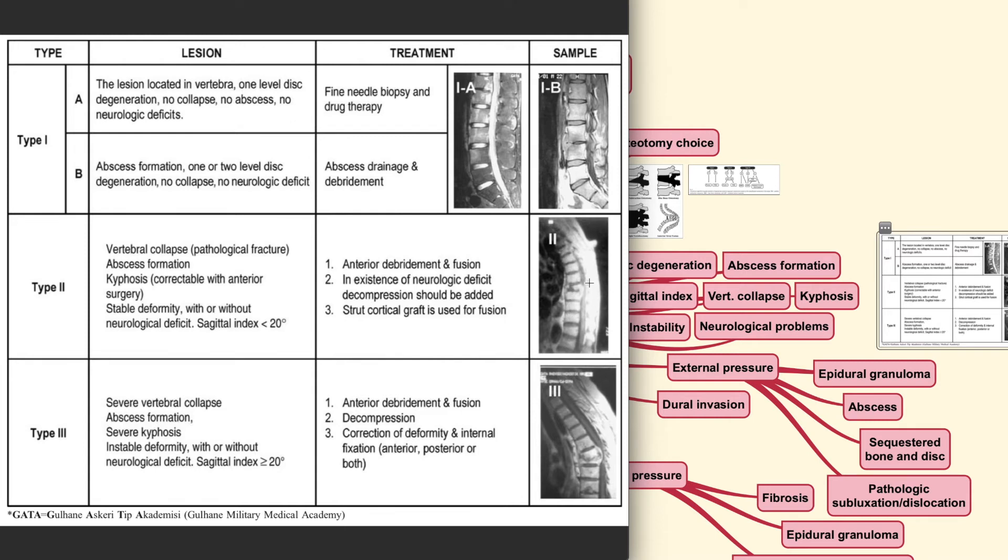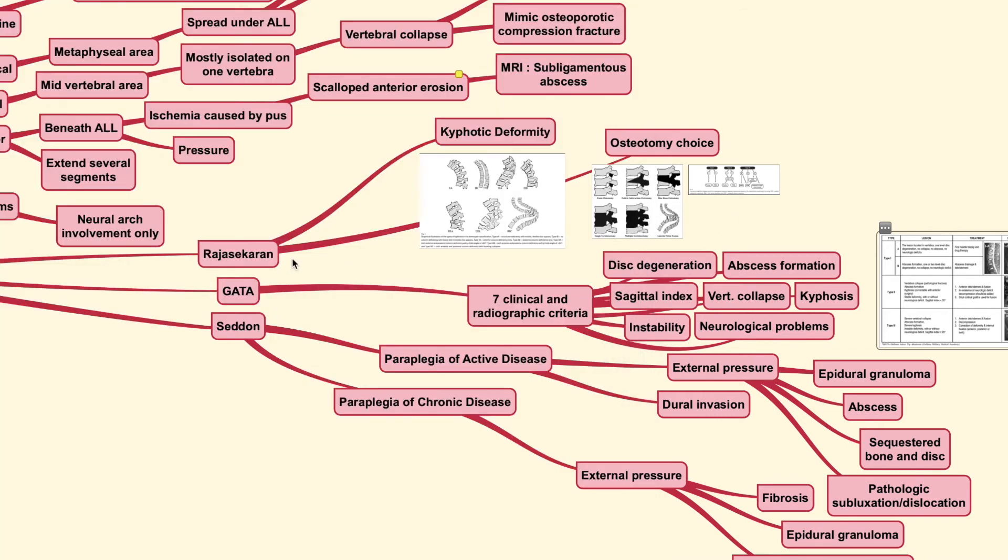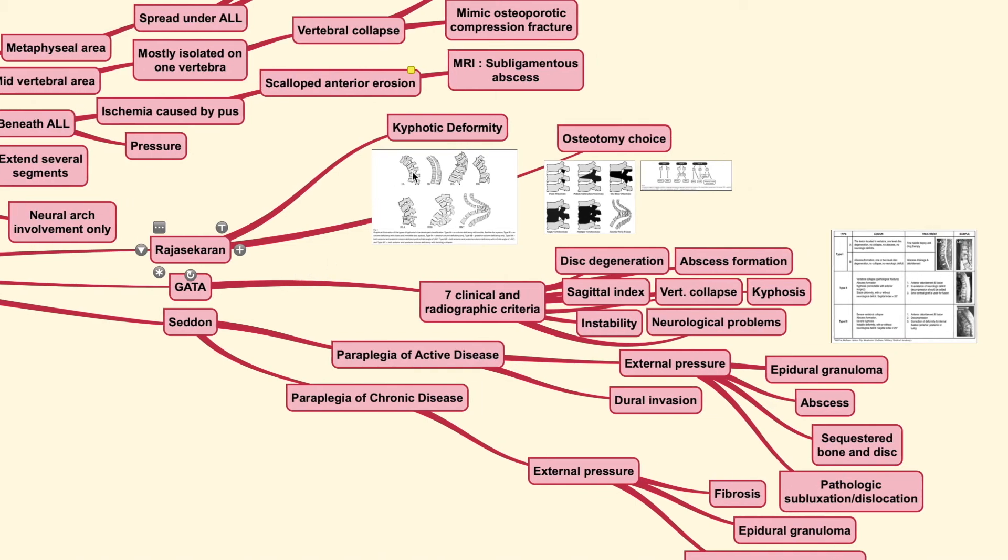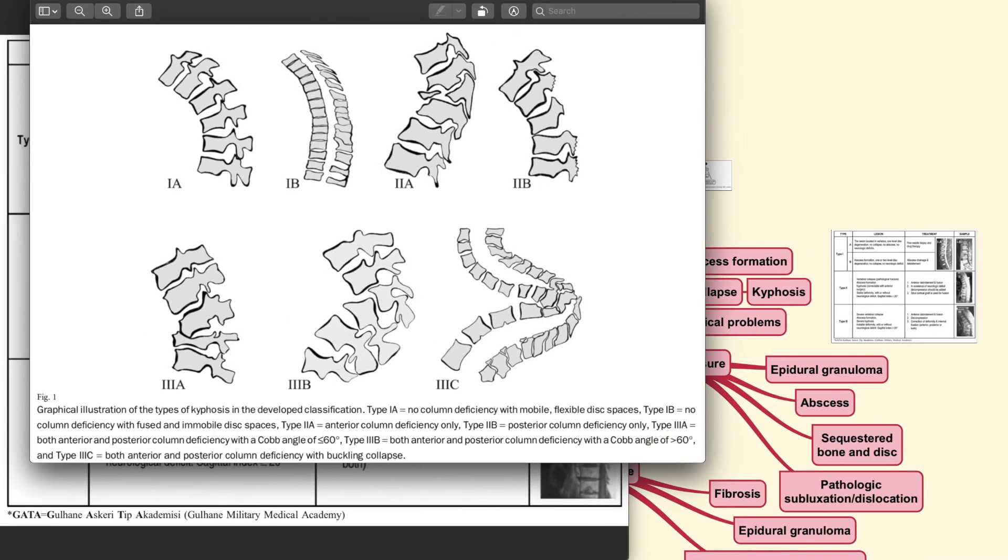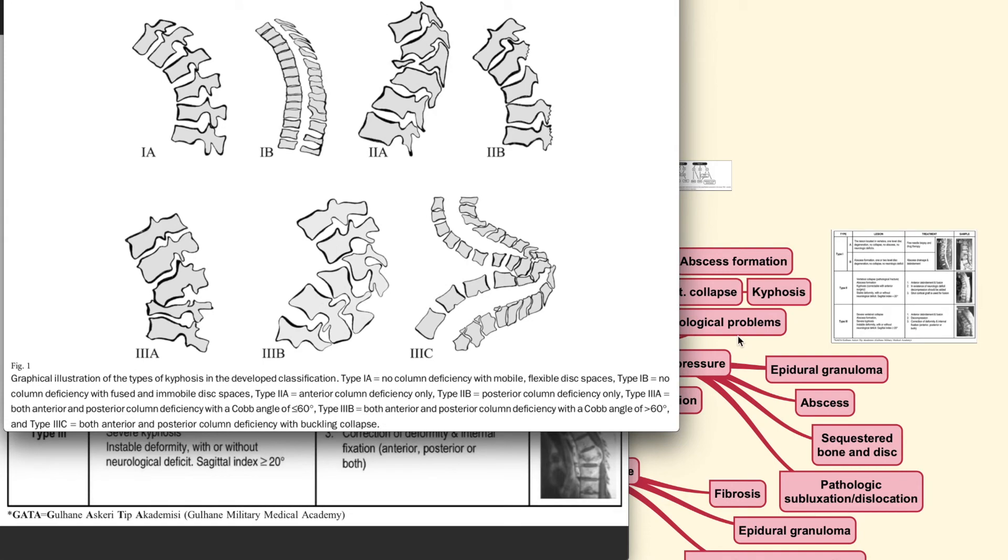In existence of any neurologic deficit, then decompression should also be added. Strut cortical bone graft is usually used for the aiding of the fusion. For the last type of this lesion, you could see a severe collapse and also a severe kyphosis here. What you could do here is debridement, decompression and also some correction of the deformity if it does indeed become a problem for the patient.